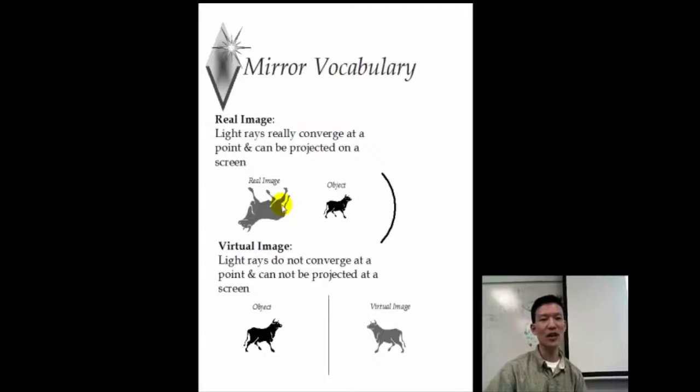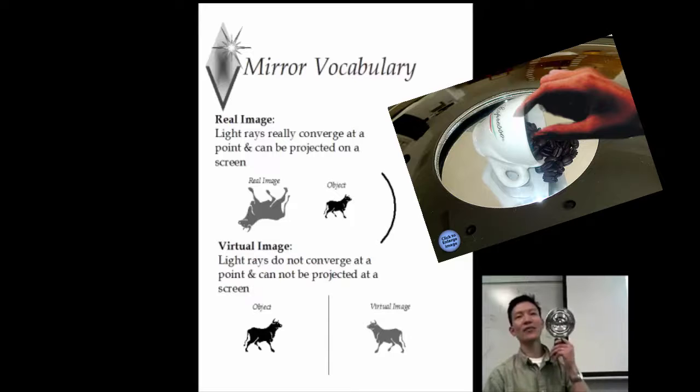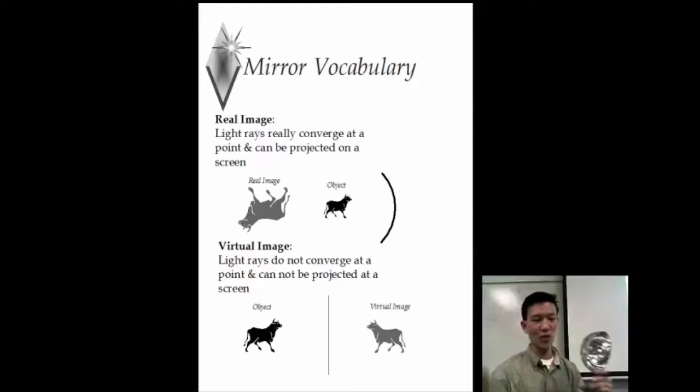Because of that, you can either get what's called a real image or a virtual image. In a real image, the light really comes together. And again, a converging mirror, a concave mirror, is the only one that pulls light together. All the other mirrors spread the light out. So what we want to do today is try to understand how is that light pulled together versus how it's spread out. And then that's how you can see how an image is formed.